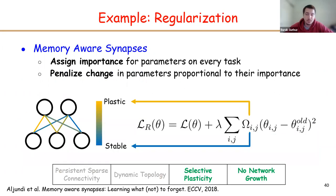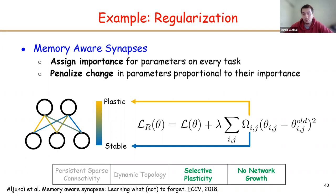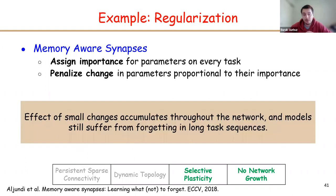As a first example of regularization, memory-aware synapses assigns an importance score to each weight to determine its plasticity. Regularization methods have selective plasticity like the brain because each weight has different plasticity, and they can learn multiple tasks without adding new modules. However, they have fixed and dense topology so units are highly entangled — even a slight change in the weights affects all other units. That's why small changes accumulate throughout the network and these models still suffer from forgetting if the sequence is very long.